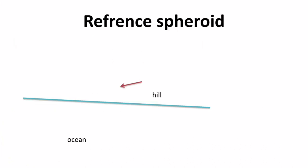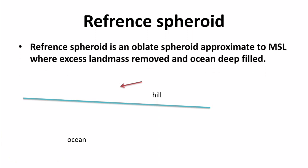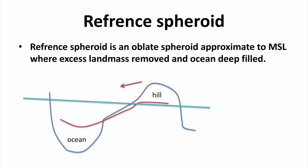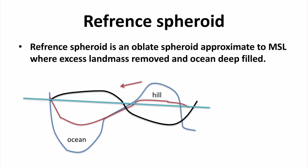The reference spheroid is an oblate spheroid that approximates mean sea level, where excess land mass is removed and ocean is in-filled. So the red line represents the geoid — in the case of a hill the geoid is elevated, and in the case of ocean the geoid is lowered — and the black line represents the reference spheroid or ellipsoid. This is our reference spheroid: an oblate spheroid approximating mean sea level where excess land mass is removed and ocean is in-filled.